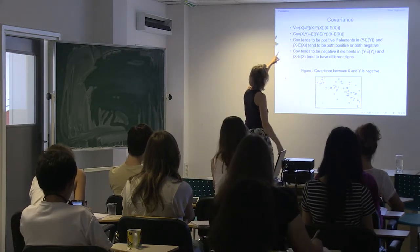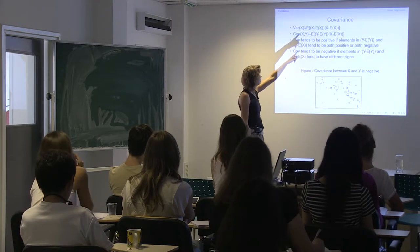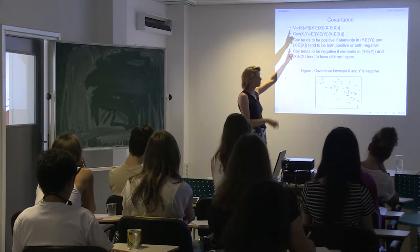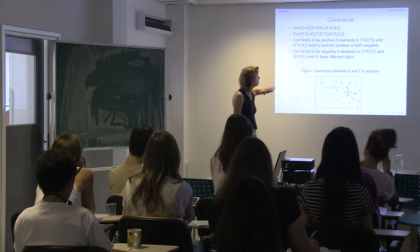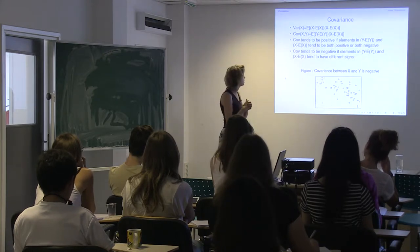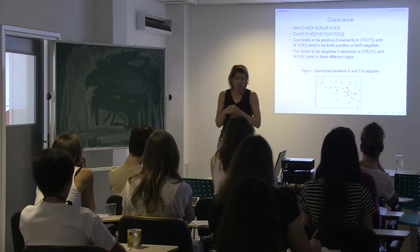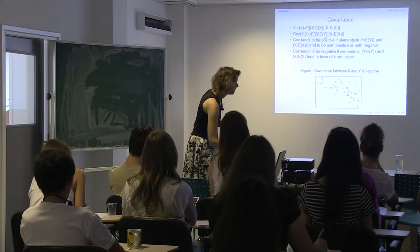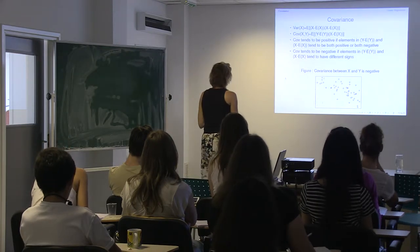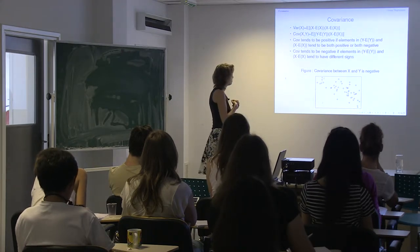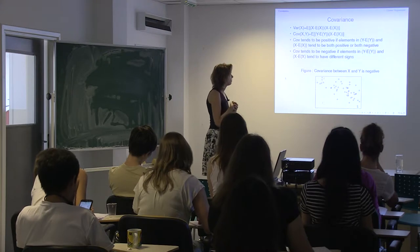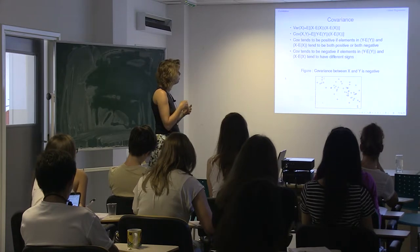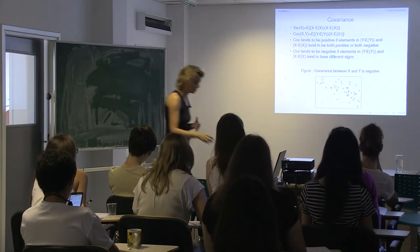Remember, the first formula is for the variance of X. We said yesterday that is the expectation of (X minus the expectation of X) squared. Now if we have two variables, it is logical to fill in for one of those terms Y minus the expectation of Y, to study how they vary jointly.